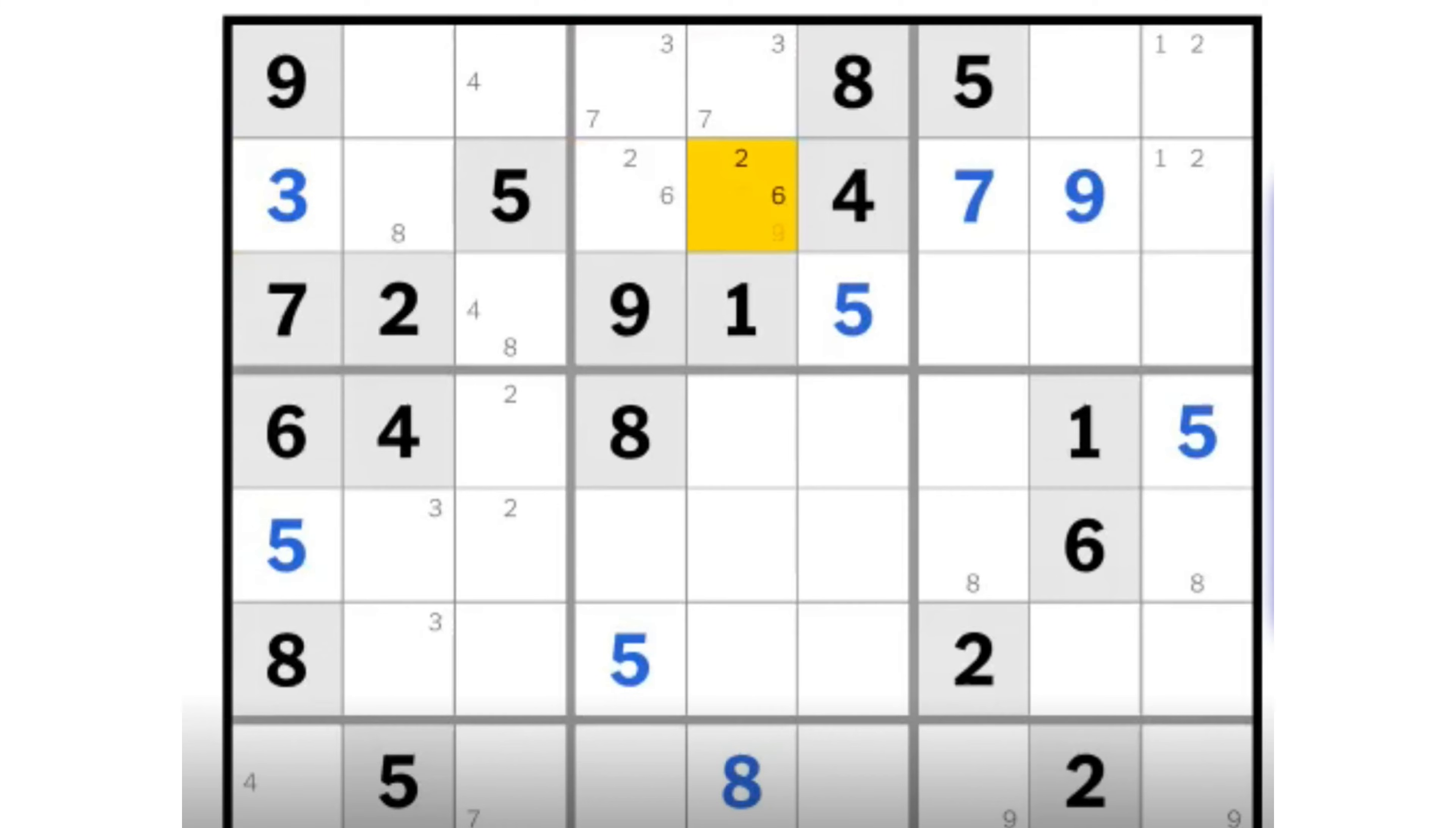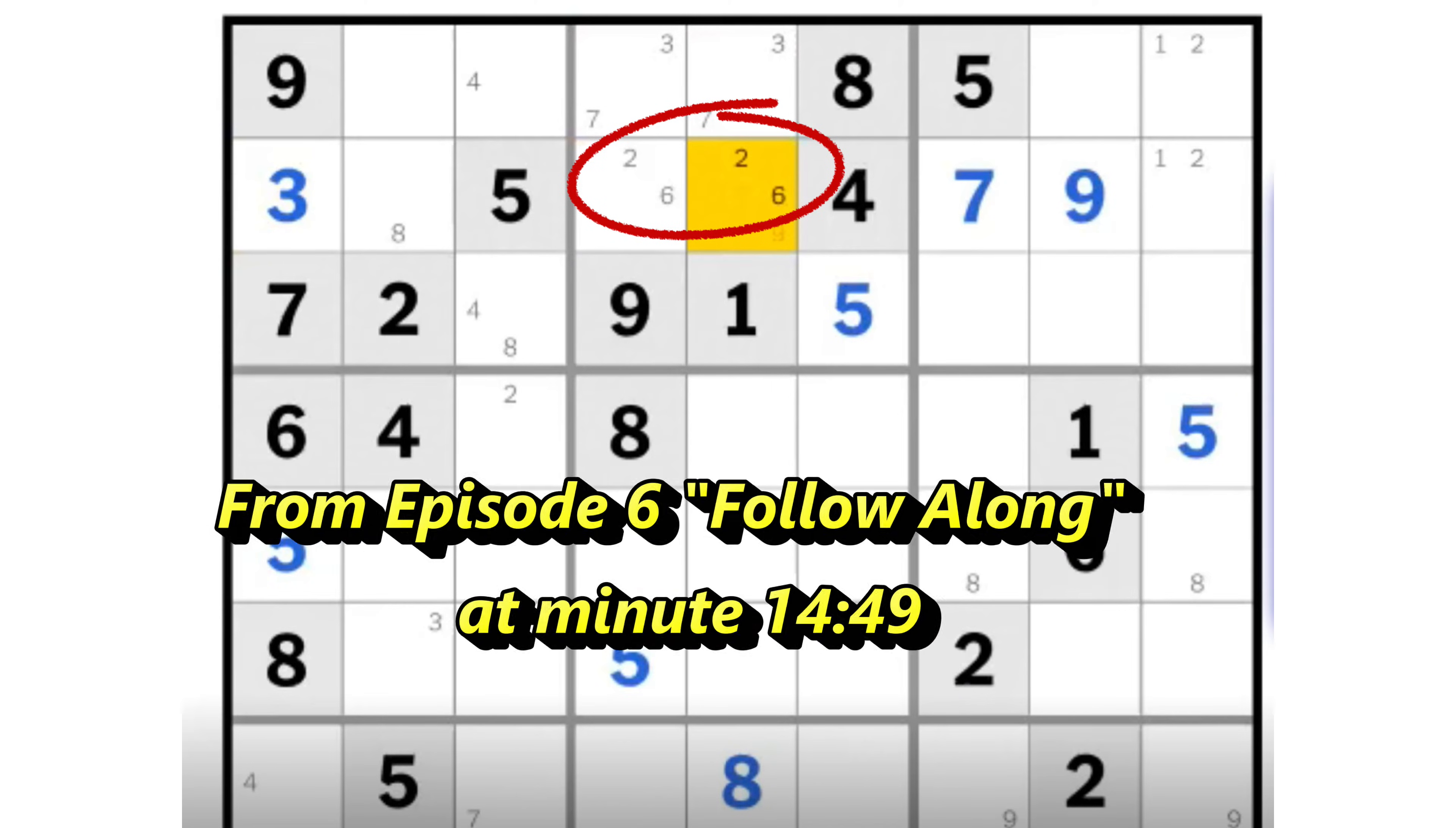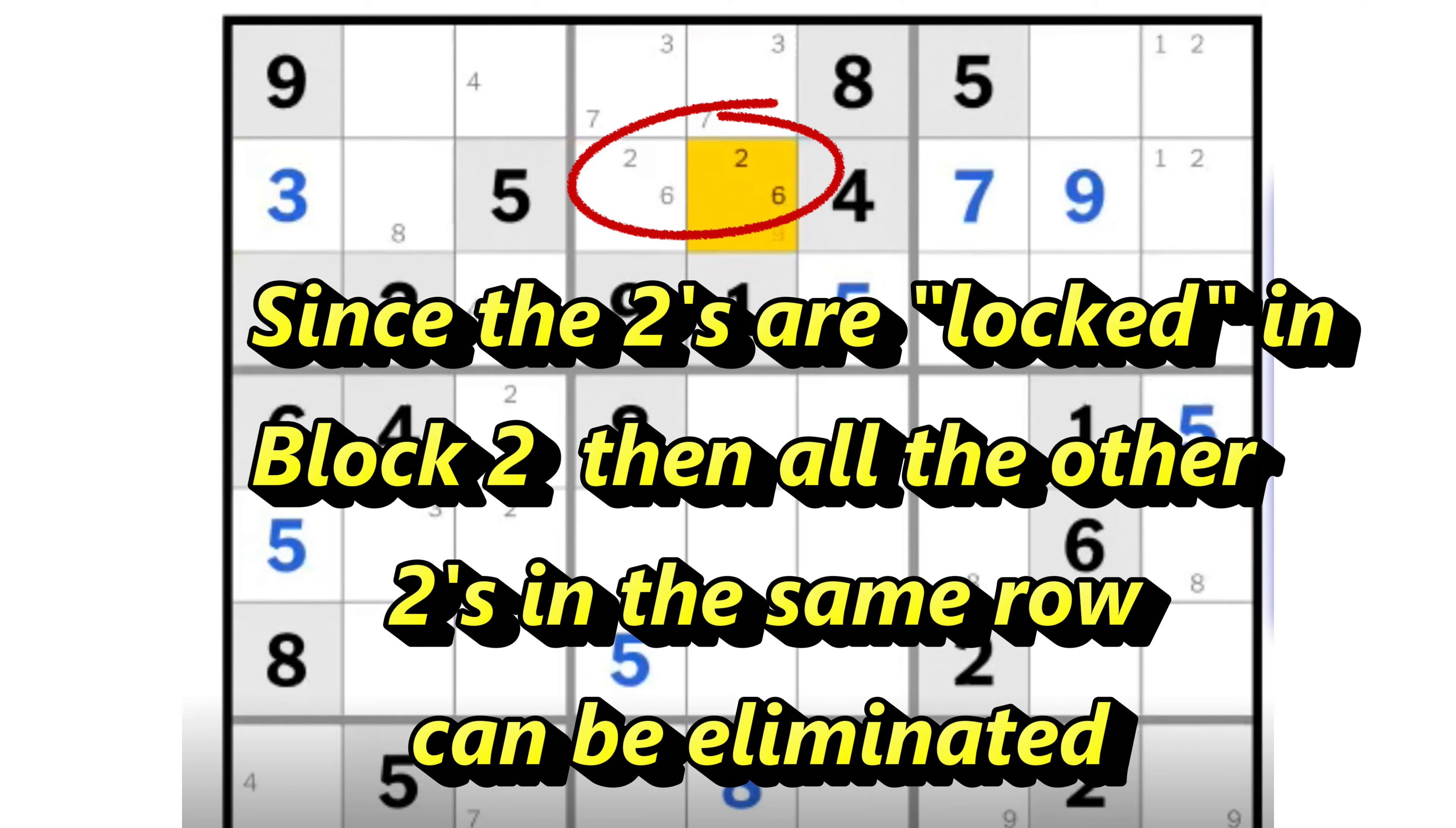If you watched my previous Solve With Me video, that was episode 6 in my follow along videos, you might remember at minute 14:49 I placed a 2-6 matching pair in the top rank and once I did that I was able to eliminate the 2 in the same row. This was because the 2s are locked into that position in block 2. I was then able to eliminate any other 2 that might appear in the same row.